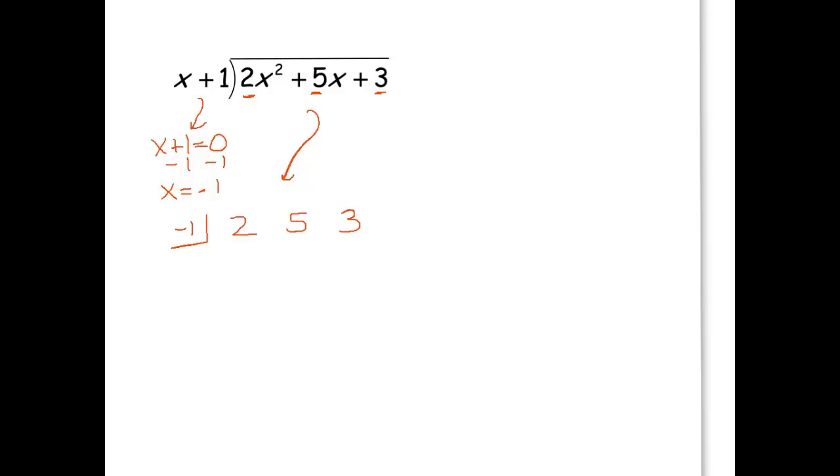We are set up to do our synthetic division. Leave my space here for a little line. Remember this step. You first bring down the 2, whatever number's there. Next, I'm going to multiply that 2 with this negative 1. I get negative 2. We always add down, so that gets me 3.